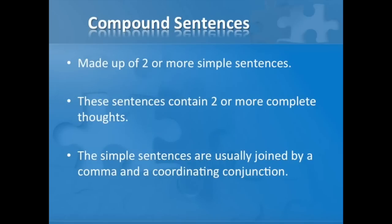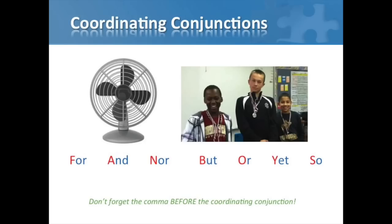So how do we make a compound sentence? Compound sentences are made up of two or more simple sentences and contain two or more complete thoughts. Usually, the simple sentences are joined by a comma and a coordinating conjunction. A helpful mnemonic for remembering the most common coordinating conjunctions is FANBOYS: F for for, A for and, N for nor, B for but, O for or, Y for yet, S for so.